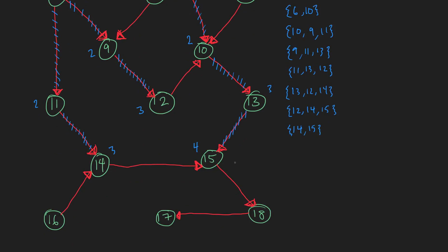Next up is 14. We dequeue 14, but 15 is already on the queue and already been discovered, so we just dequeue it. Then we dequeue 15 and enqueue 18, which is at a distance of 5. So 18 is now in the queue. We then dequeue 18 and find 17, at a distance of 6. So 17 is now in the queue.